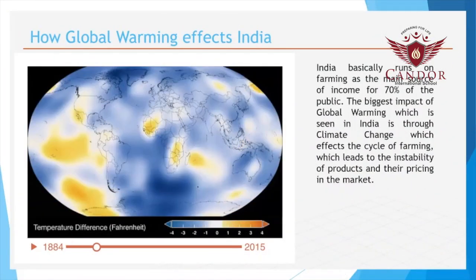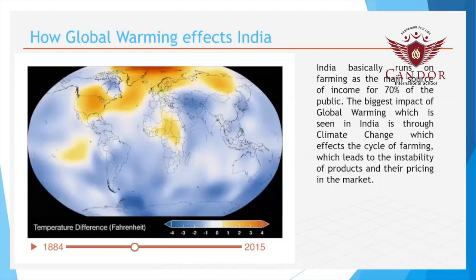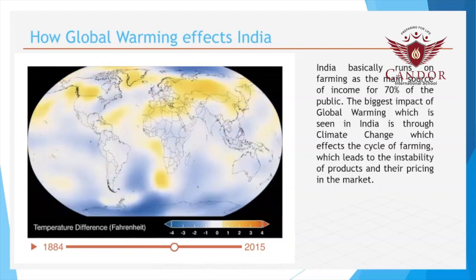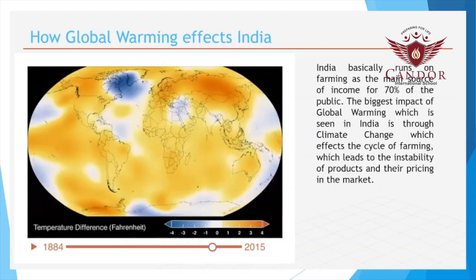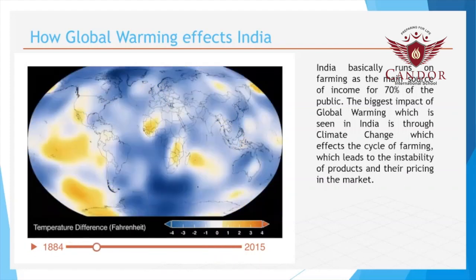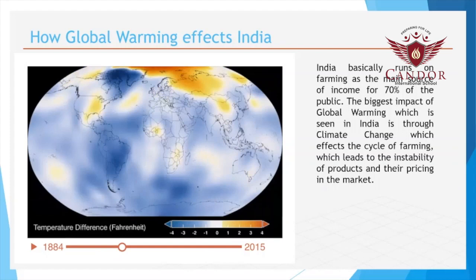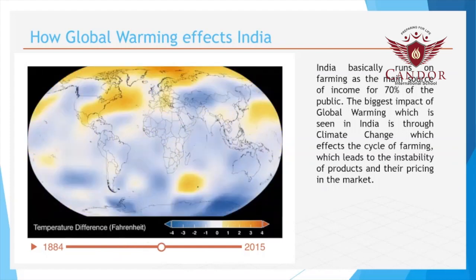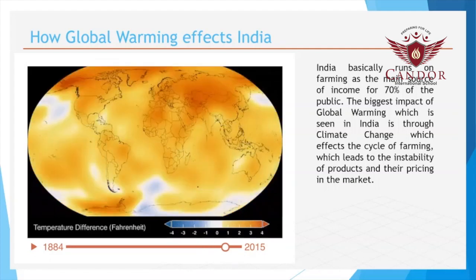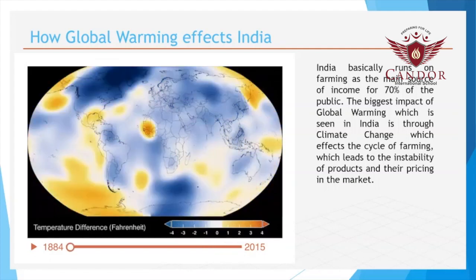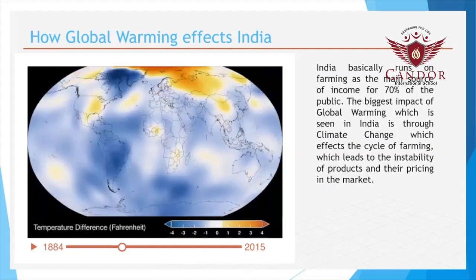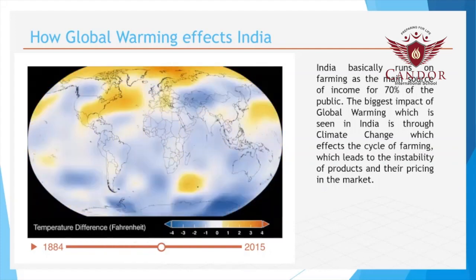How global warming affects India: most of India, about 70%, runs on farming as their income. Due to the severe changes in the climate, farming has become hard. And if people can't farm, then they won't have enough money for providing for their family. This is also a problem we have to face.